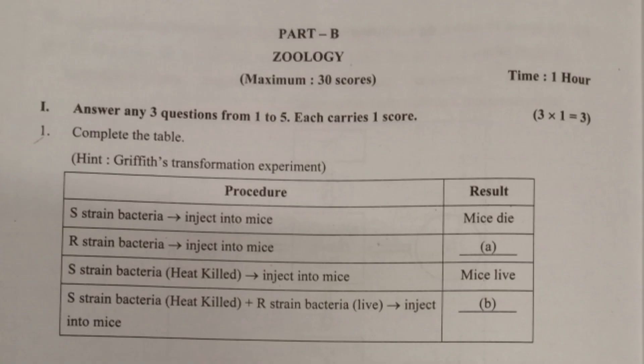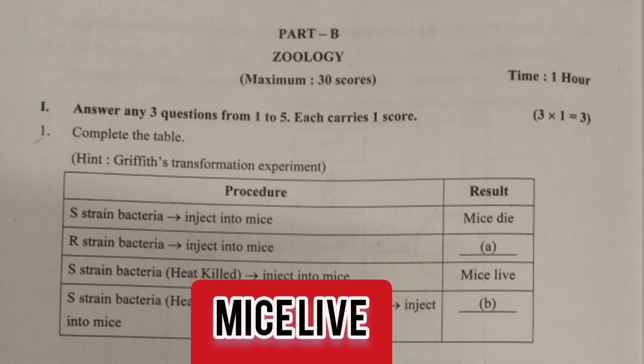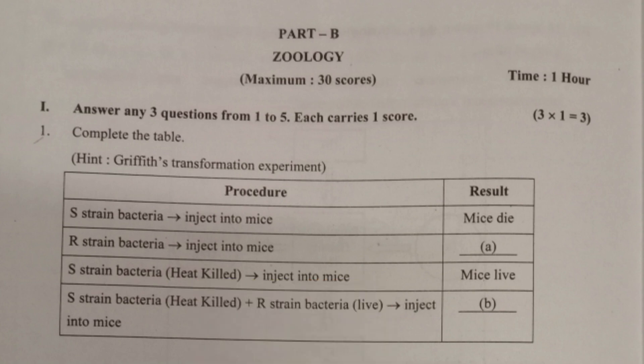Question 1: Complete the table. R-strain bacteria injected into mice — answer: mice live. S-strain bacteria plus R-strain bacteria injected into mice — answer: mice die.